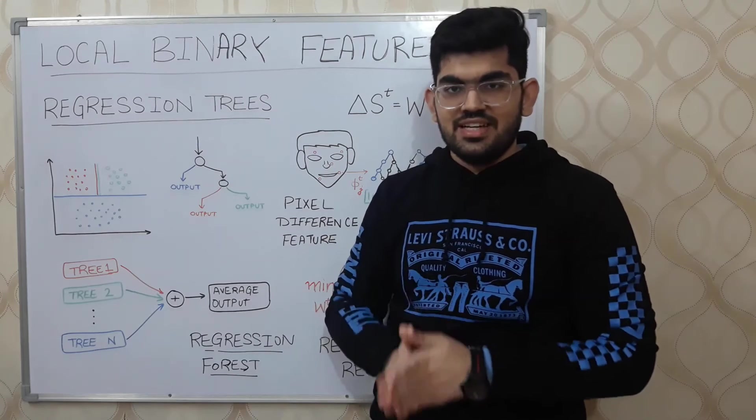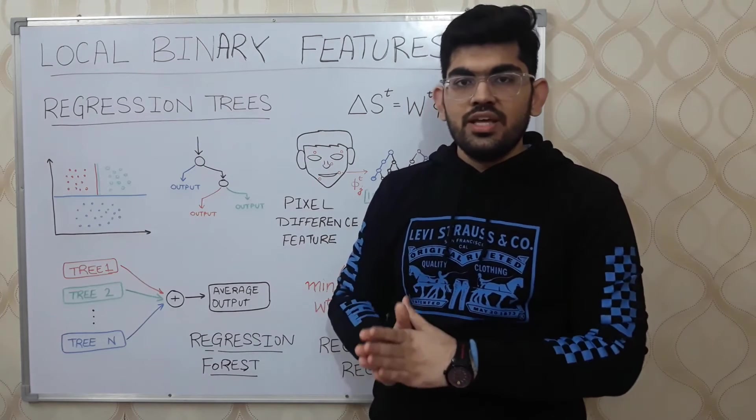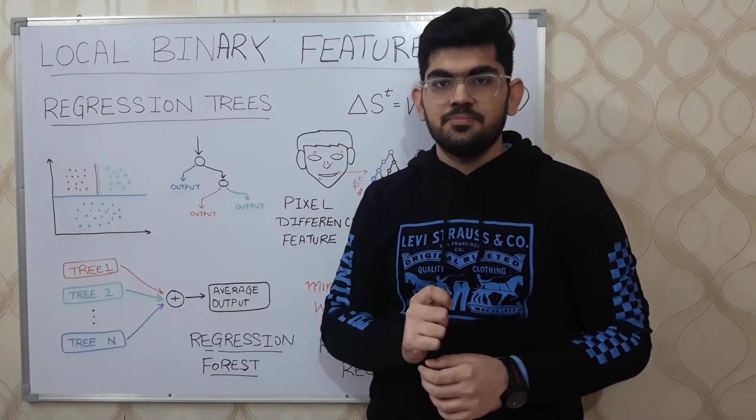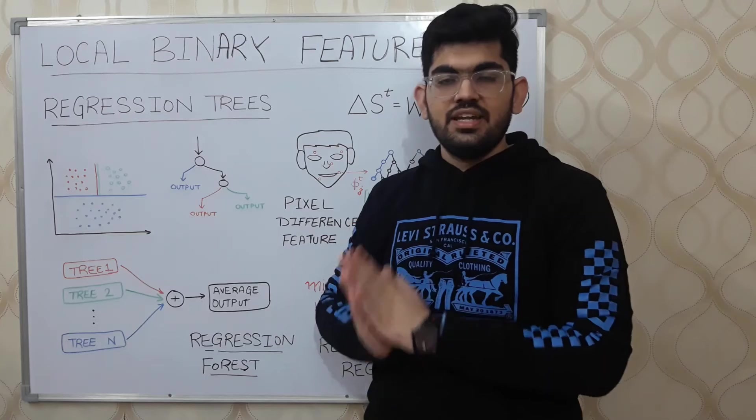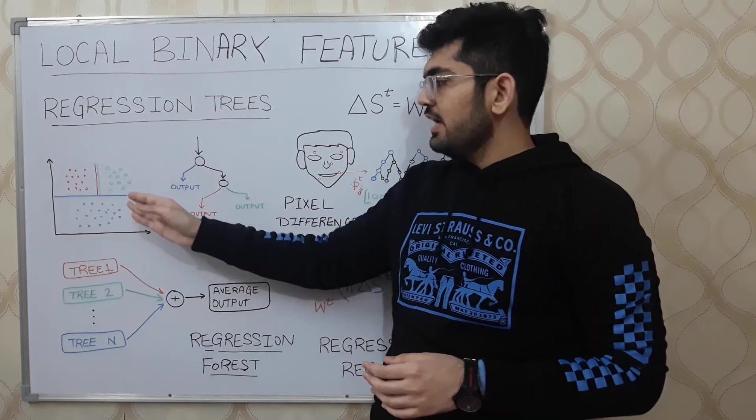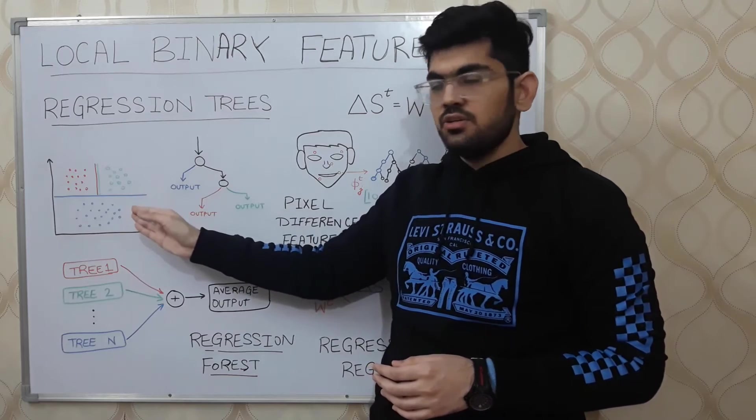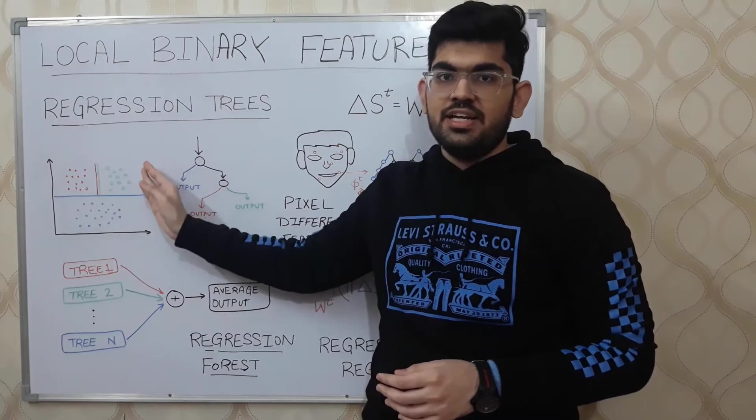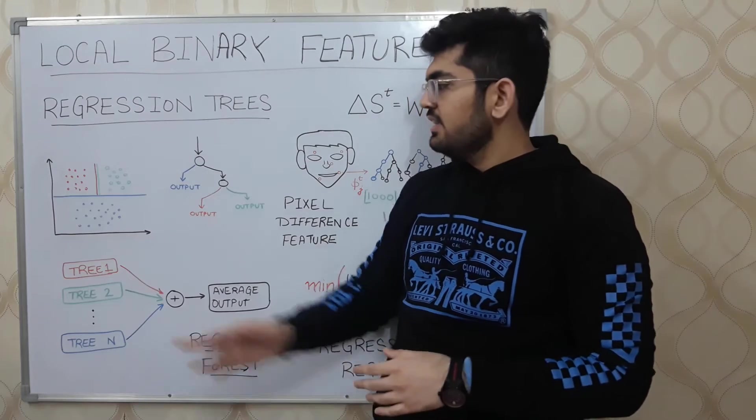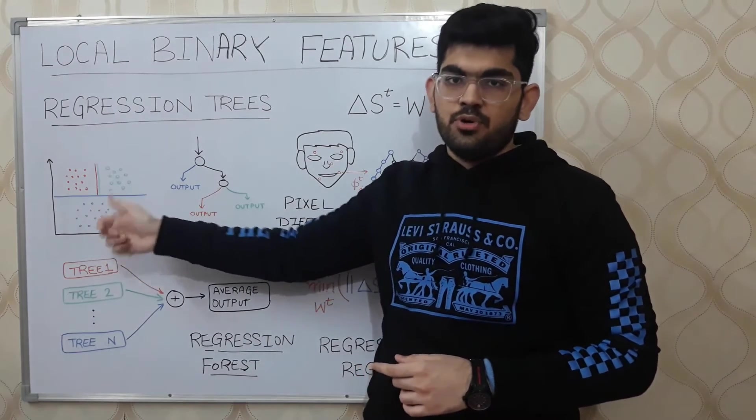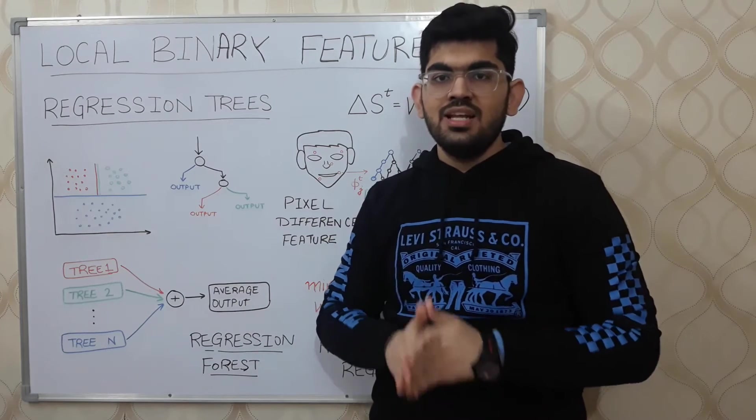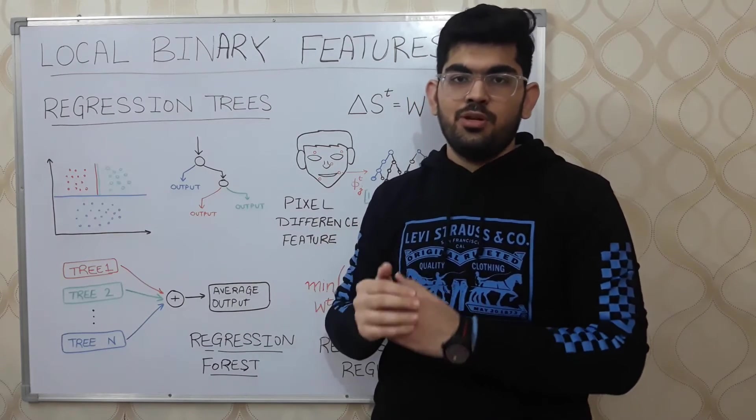Now, if we want to extend these decision trees to a regression based problem, we use what are called regression trees. Converting this to a regression based problem would mean that we want to predict a corresponding value based on the given different sets of data. One way a regression tree would accomplish this would be taking the average of these data points. Now regression trees are not that powerful as far as a regression problem is concerned.